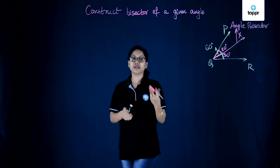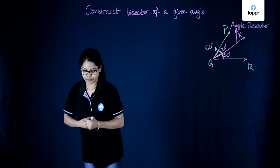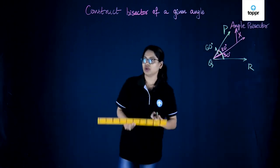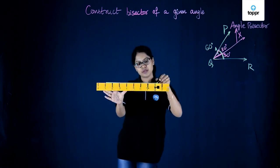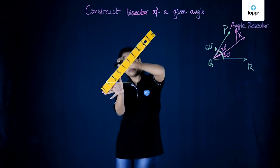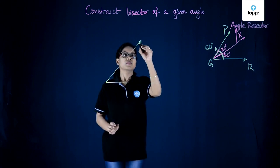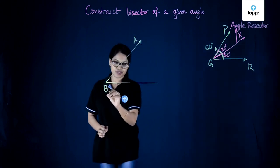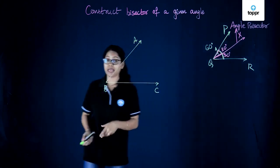So let's take a given angle and learn how to construct its angle bisector. Let's first draw an angle that is given. Supposing we have an angle named ABC. So ABC here is the given angle and now we'll be constructing its angle bisector.